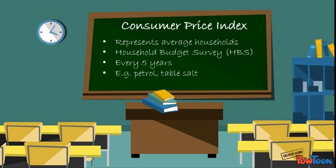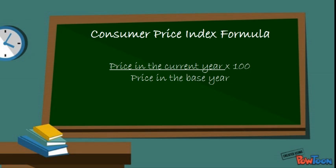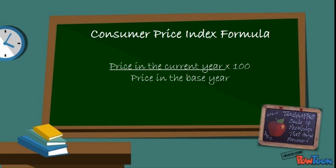For example, a 5% rise in the price of petrol would have a bigger effect or impact on the Consumer Price Index than a 10% rise in the price of table salt. So how do we calculate the Consumer Price Index? For this, we use a simple formula: the price in the current year over, or divided by, the price in the base year, multiplied by 100.